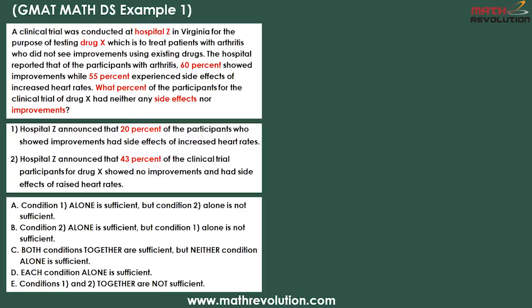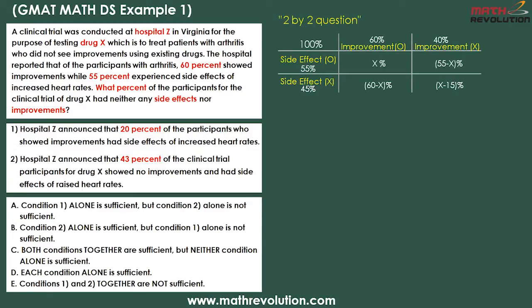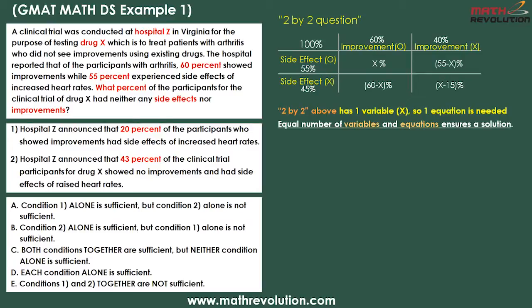This type of question is what we call 2x2, which occurs frequently on GMAT Math. The information given in the question prompt becomes a 2x2 table that easily summarizes a lot of information. The 2x2 table has one variable x, so one equation is needed. This is because an equal number of variables and equations ensures a solution in the DS section. So the above question will likely have D as the answer, because each statement alone is sufficient.